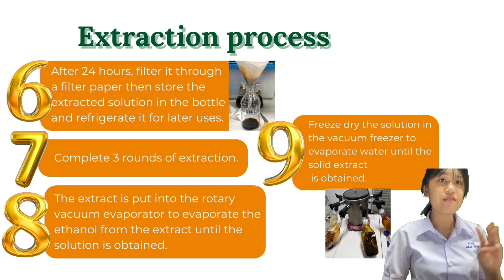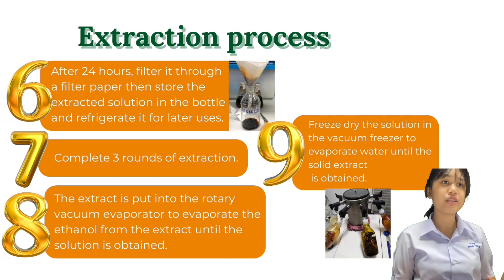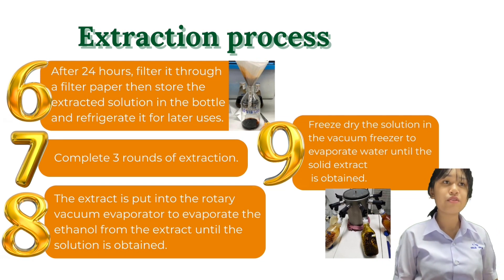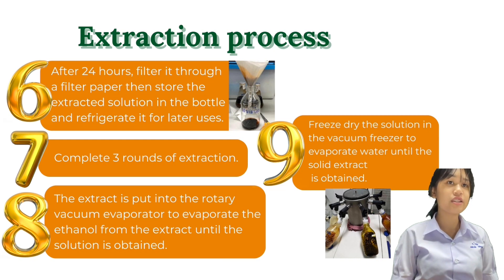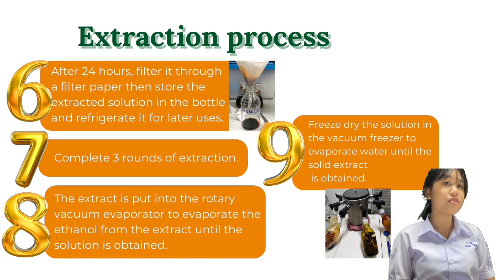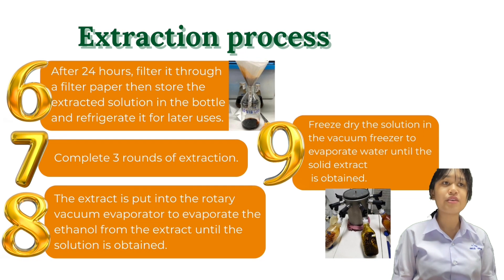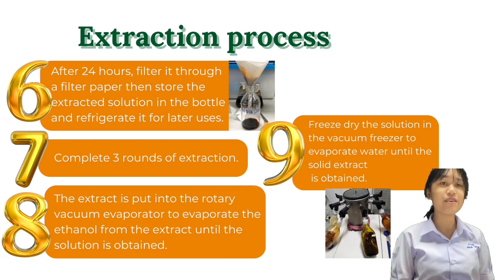After completing 3 rounds of extraction, the extract is put into a rotary vacuum evaporator to evaporate the ethanol from the extract until the solution is obtained. Freeze-dry the solution in a vacuum freezer to evaporate water until the solid extract is obtained.